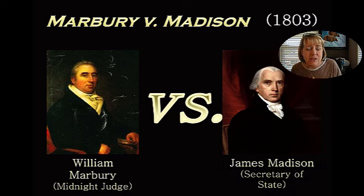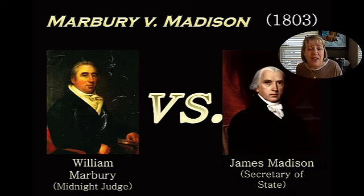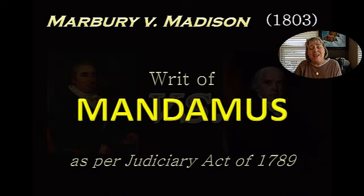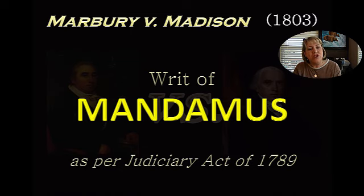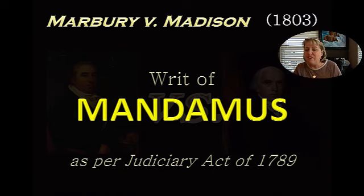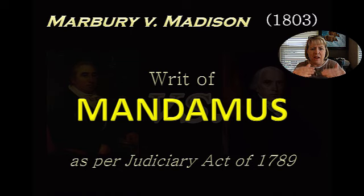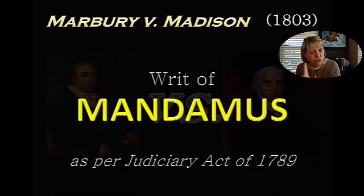Marbury is having none of this and he is going to sue the United States, specifically James Madison, demanding that his appointment be delivered. What he's asking the Supreme Court to do under the Judiciary Act of 1789 is to issue what's called a writ of mandamus. A writ of mandamus is basically a court order issued towards a political official, towards a branch of government, towards a company — saying you have to take this mandatory action. That's what Marbury is asking here: he's asking the courts to force Madison to deliver his appointment.